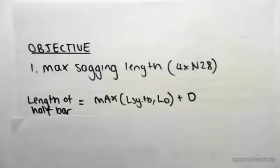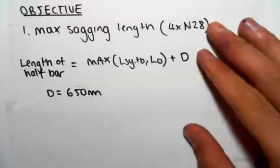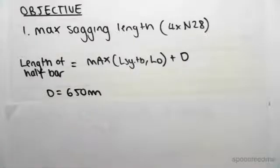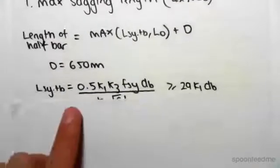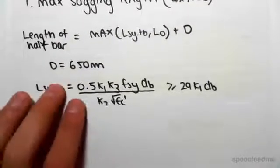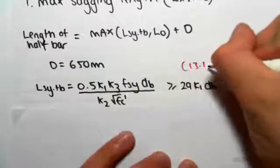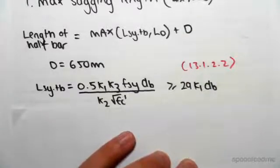That's just the formula there. So we want to find D which is just the depth of the beam. We know that to be 650 mil. Lsy.tb is this formula here, that's just straight from the code. It is in section 13.1.2.2 if you haven't seen it before, look it up and you can follow as we go along.